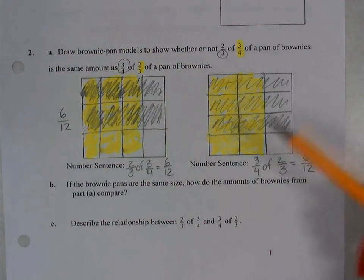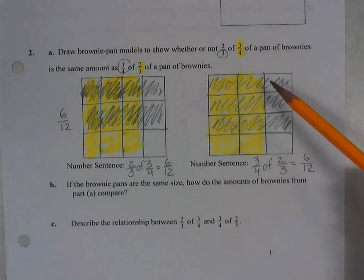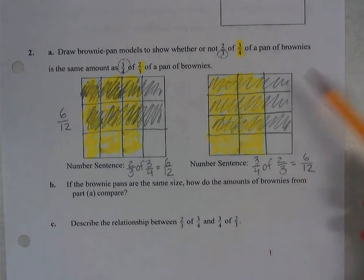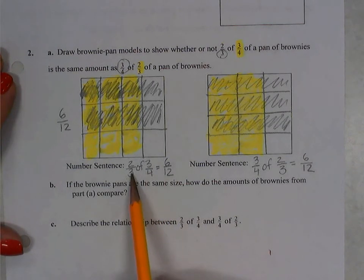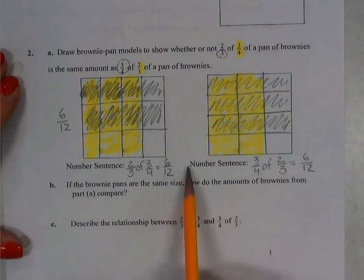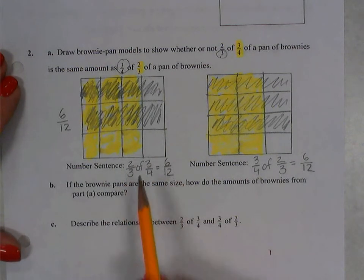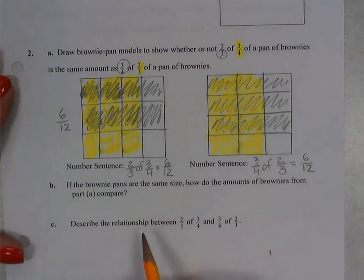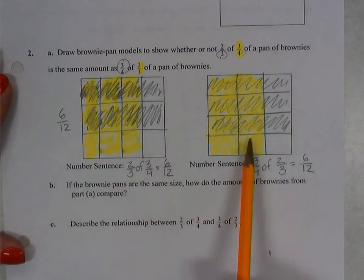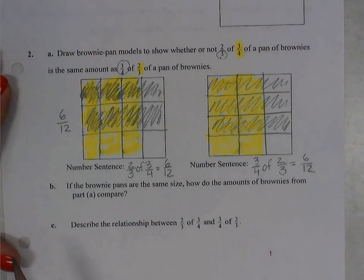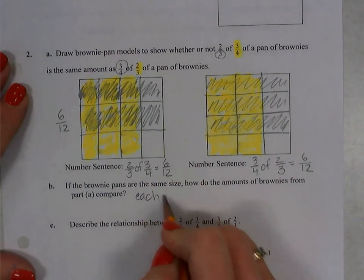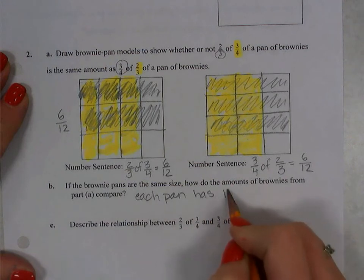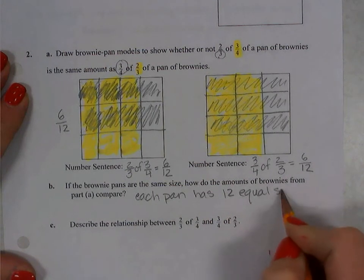So why do we show multiplication this way? Because we're trying to visualize why it makes sense that we would take our numerators and multiply them together, and take our denominators and multiply those together. We need to make sense of this algorithm before we start using it. So what do you notice here? If you look at each of these brownie pans, and the pans are the same size, they are both divided into twelve equal-sized pieces. So each pan has twelve equal sized pieces.